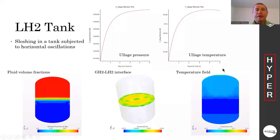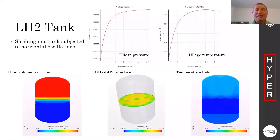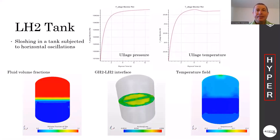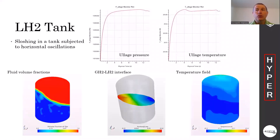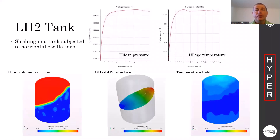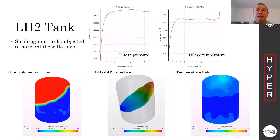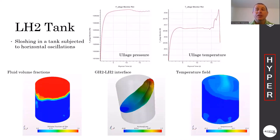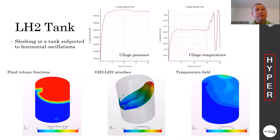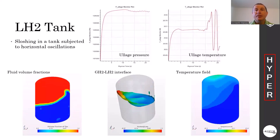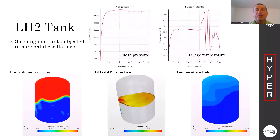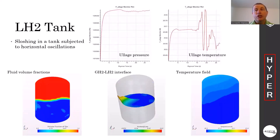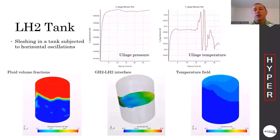The first scenario represents sloshing inside the tank experiencing horizontal oscillations. As you can see, there are significant motions of liquid that lead to intensive heat exchange between liquid and ullage. That results in the reduction of pressure inside the ullage, and the ullage temperature approaches that of the liquid.